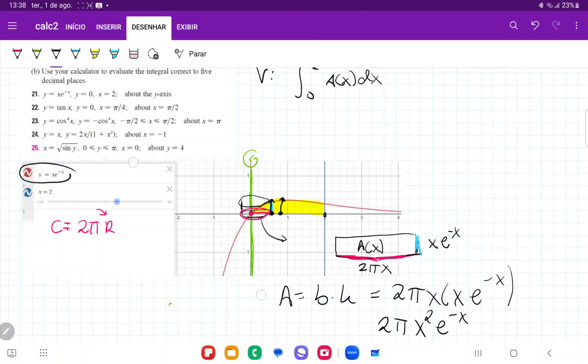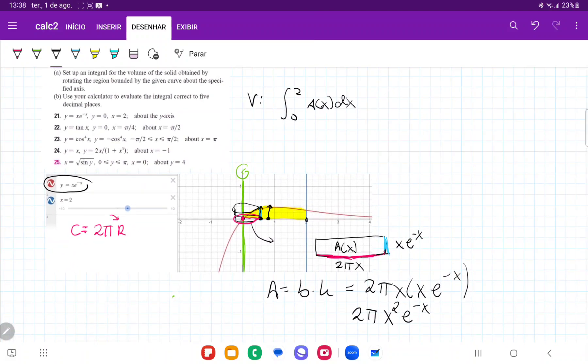So, once we have an expression for our area, we can go ahead and put that into our integral, right? So, the volume is going to be the sum from 0 to 2. I'm going to put the 2π outside because it's a constant. And that is going to be the integral of x² times e^(-x) dx.